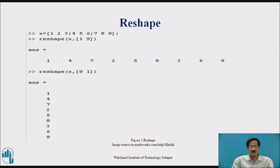Next, reshape X comma bracket 9, 1 means we are reshaping the given matrix into 9 rows and 1 column. After execution of this reshape X comma 9, 1 will give a column matrix which is given here.